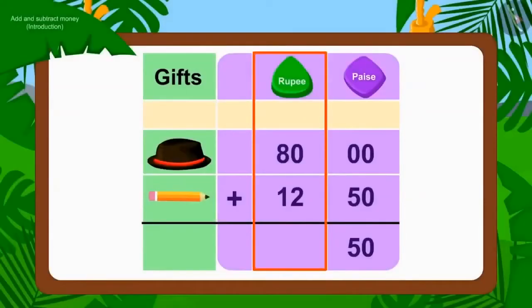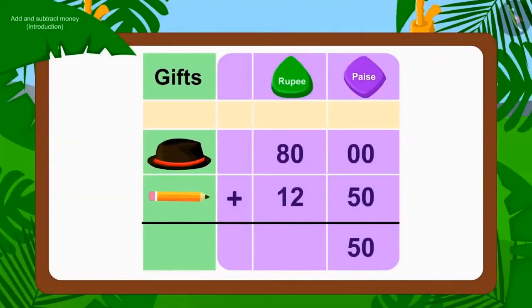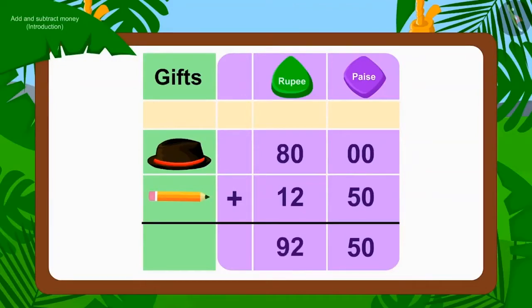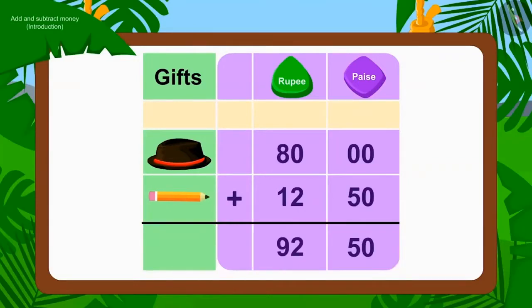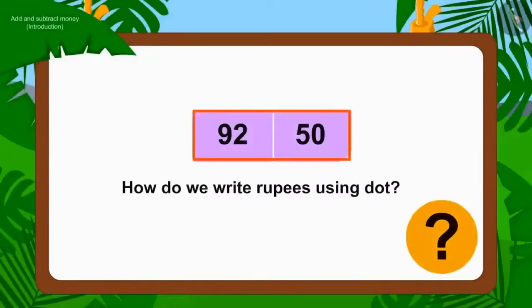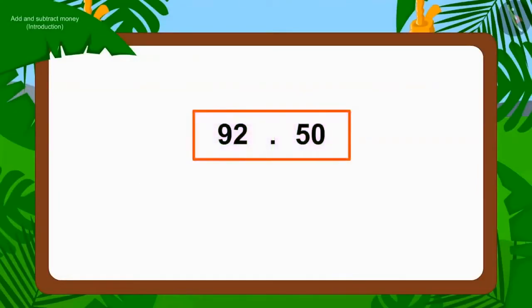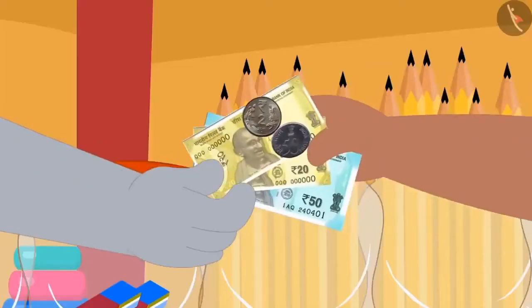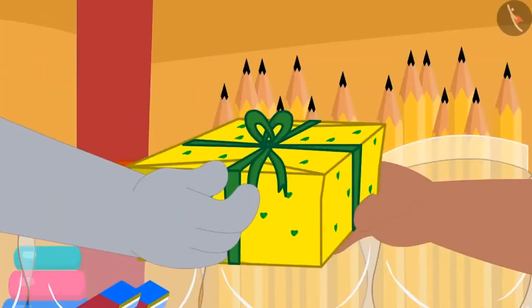Now we will add the rupee numbers. The cap costs Rs. 80.00 and the price of the pencil is Rs. 12. So 80 added to 12 is Rs. 92.00. In this way, the total value of both items became Rs. 92.50. To write this using a decimal point: to the left of the point we write the number of rupees, and to the right we place paise. The three together paid for the hat and pencil and bought the gift.